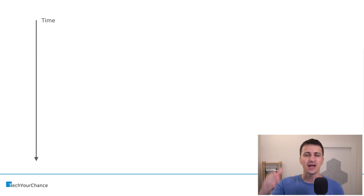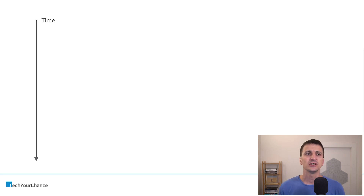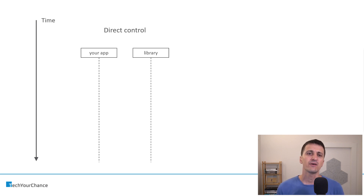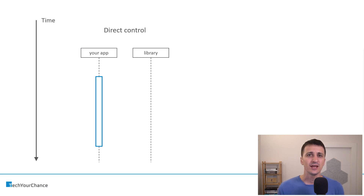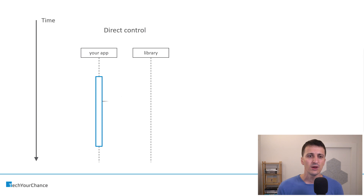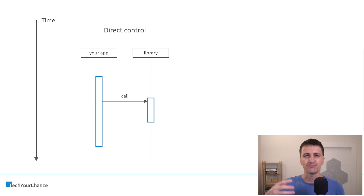Imagine you have a time axis going from the top to bottom on the screen. I'm going to use UML — Unified Modeling Language — sequence diagrams. Let's discuss direct control. We have our application and some library that we use inside the app. That's the lifetime of our application — time goes from top to bottom. At some point in time, we need to use this library, so we issue a call to the library. Inside the library, there is some process going on, some flow executing. When this flow completes, the library returns a response to us.